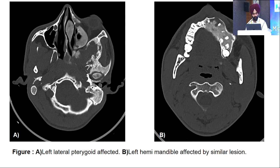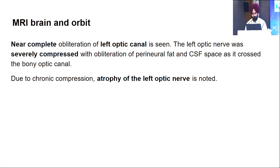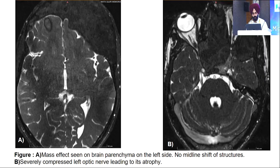Figure A shows the left pterygoid plate affected and figure B shows the left hemimandible affected. MRI of the brain and orbit showed near-complete obliteration of the left optic canal, with the left optic nerve severely compressed. Due to chronic compression, left optic nerve atrophy was observed. In figure B, the left optic nerve is visibly compressed, and in figure A, mass effect on the brain parenchyma on the left side is noted, though there is no midline shift of the structures.